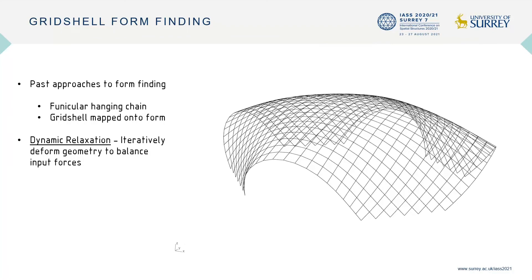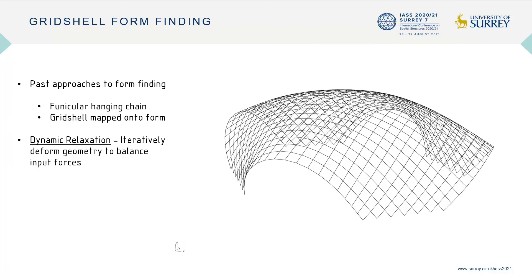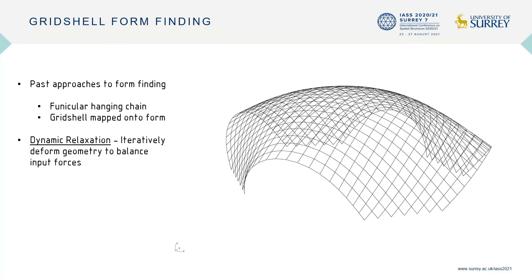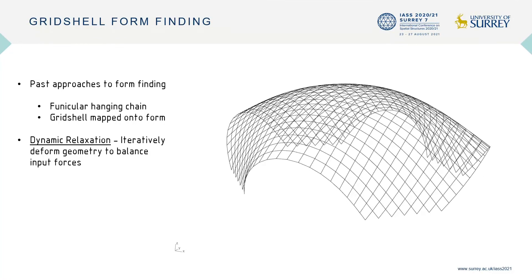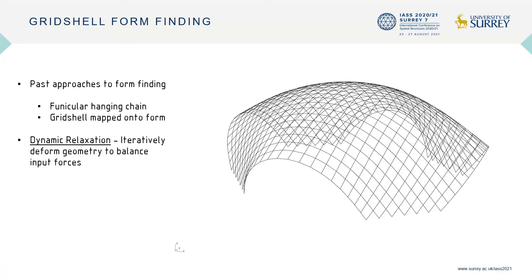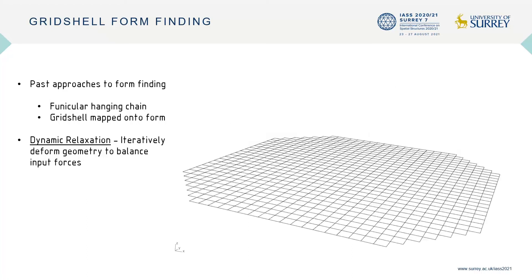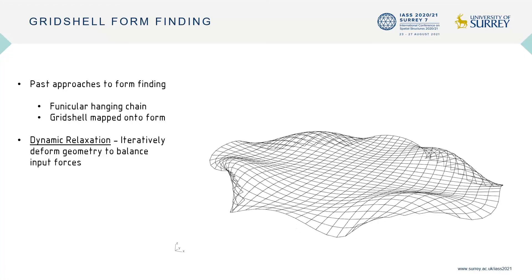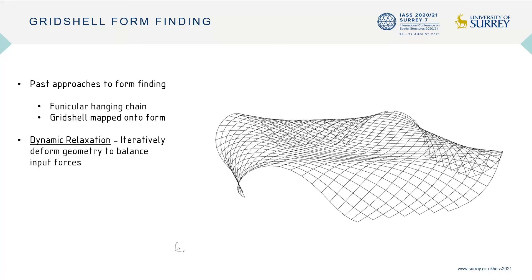For our project, we used Kangaroo Physics as a solver. Here is a typical grid shell model I made that works by moving the anchor points inward.